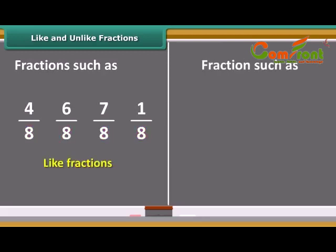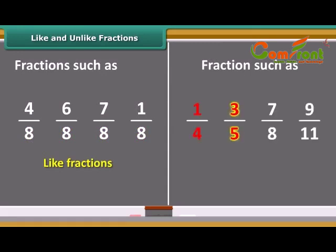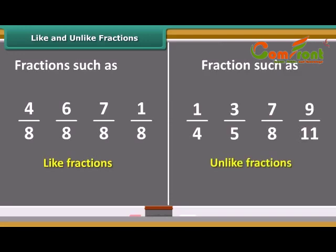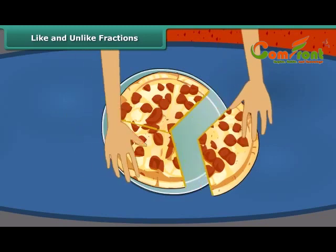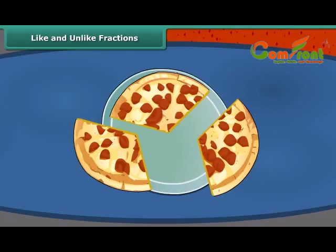Fractions such as 1 upon 4, 3 upon 5, 7 upon 8, 9 upon 11 with different denominators are called unlike fractions. Looking at the question we earlier asked, we can say that each of them — Rahul, Rima and Nina — received one third part of pizza. Notice that this is also an example of like fractions.